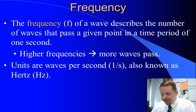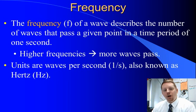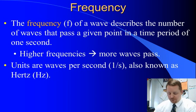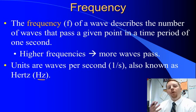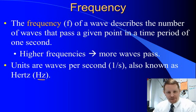So frequency, f, describes the number of waves that pass a given point in a time period of 1 second. So if you had 5 waves per second, your frequency would be 5 hertz. The units are 1 over seconds or hertz, which we abbreviate with the capital Hz. Higher frequencies, more waves per second. Lower frequencies, fewer waves every second.